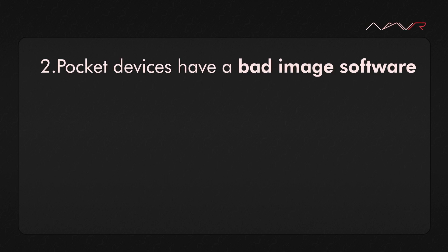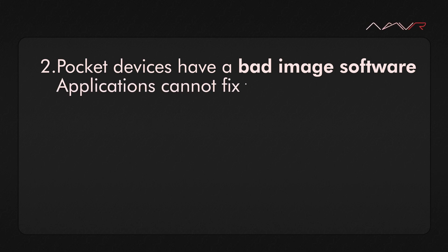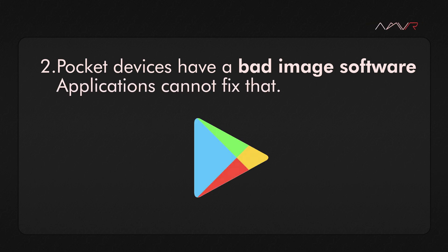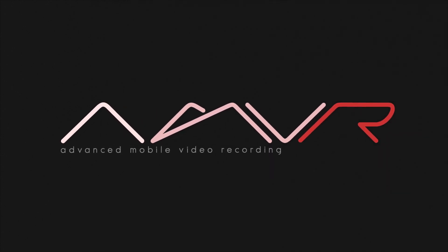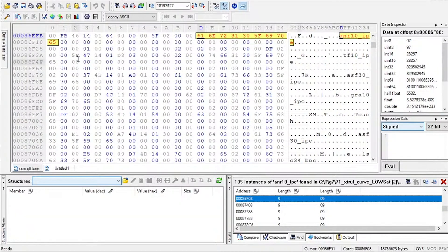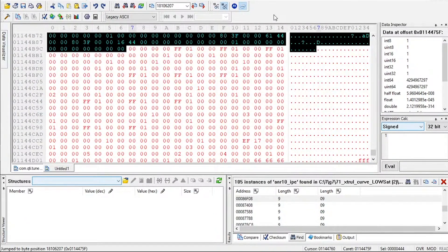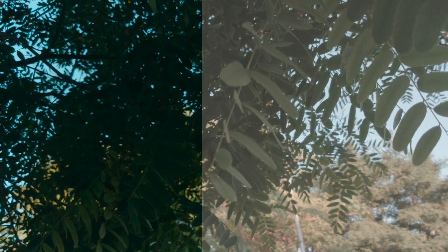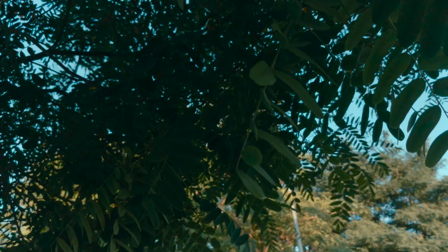Okay, enough for now. Conclusion of this second video: pocket devices have bad image software all around — we think on purpose — and applications are not the solution because the system isn't accessible. That's why AMVR was born: we are not just an app, we are software focused on expert content creators. In the next video, we're going to explain who AMVR is, what we do, and how we transform a mobile device into a pocket mirrorless camera.